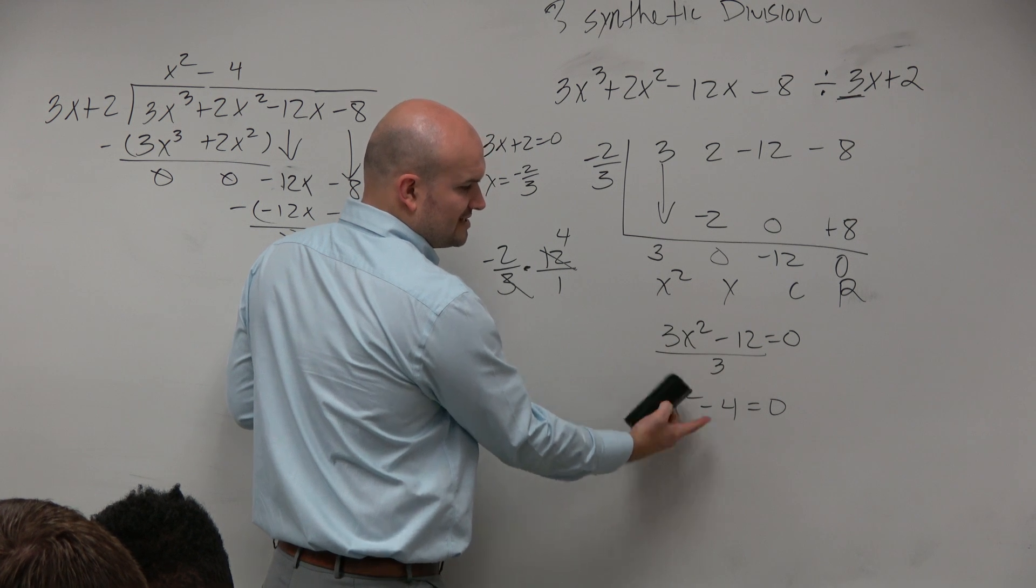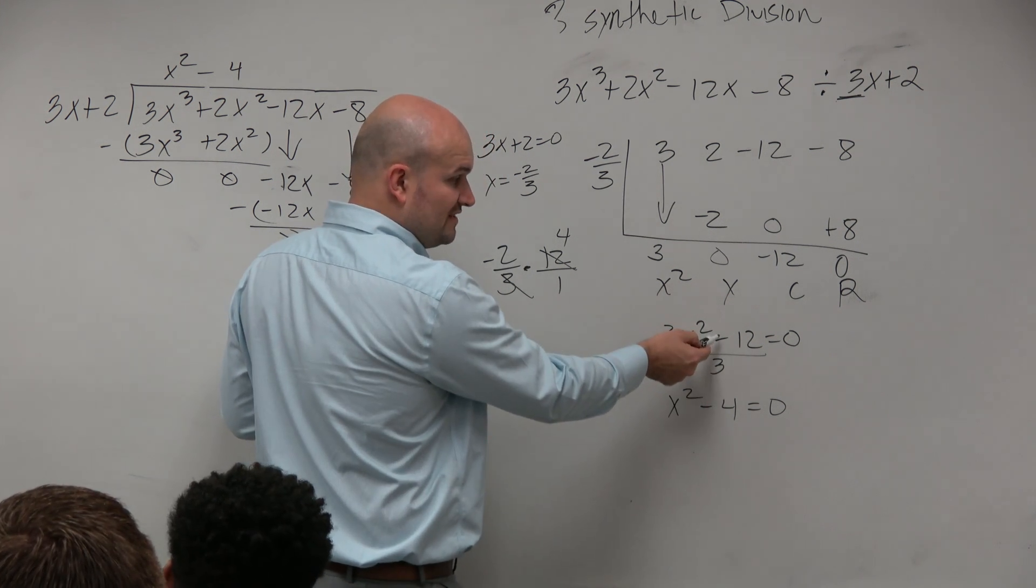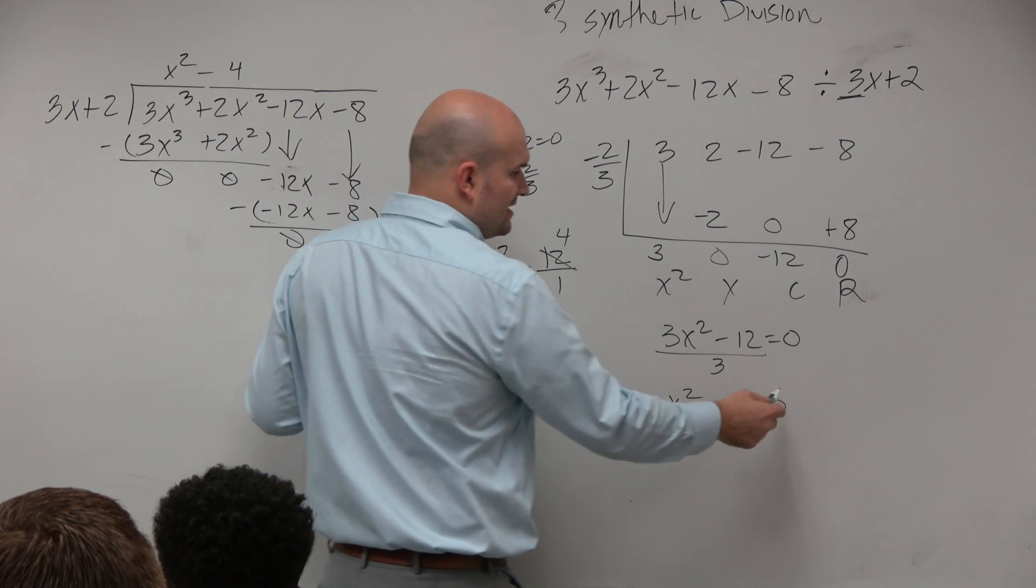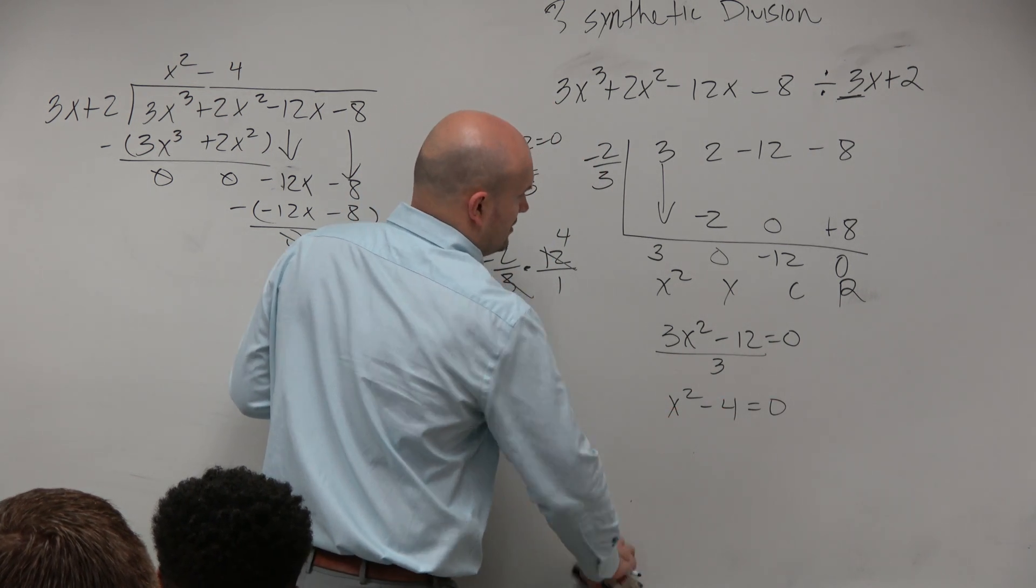And either way, you guys can see that if these are our two, if this is our factor, or even if this was our factor, you guys can see that the factored form would be x minus 2, x plus 2. Correct?